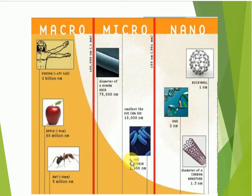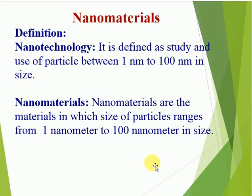Before we move towards nano materials, we must know macro, micro, and nano. Macro means large in size, micro means 10 to the minus 6, and nano means 10 to the minus 9 meters. Examples of nano materials include buckyballs (fullerene), DNA, and carbon nanotubes. Nano technology is defined as the study and use of particles between 1 nanometer to 100 nanometers in size.